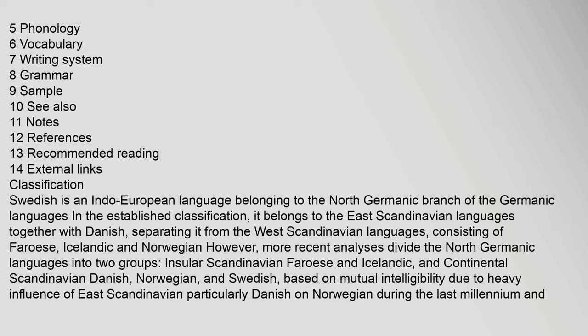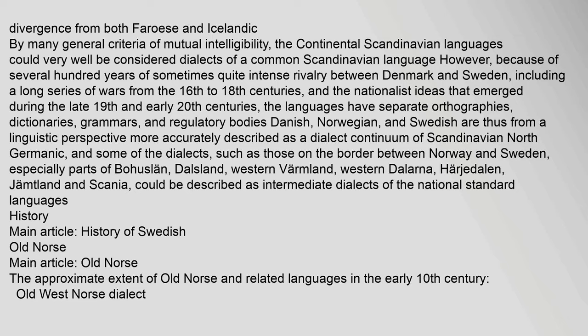This division is based on mutual intelligibility, due to heavy influence of East Scandinavian — particularly Danish — on Norwegian during the last millennium, and divergence from both Faroese and Icelandic. By many general criteria of mutual intelligibility, the continental Scandinavian languages could very well be considered dialects of a common Scandinavian language. However, because of several hundred years of sometimes quite intense rivalry between Denmark and Sweden, including a long series of wars from the 16th to 18th centuries, and nationalist ideas that emerged during the late 19th and early 20th centuries, the languages have separate orthographies, dictionaries, grammars, and regulatory bodies. Danish, Norwegian, and Swedish are thus more accurately described as a dialect continuum of Scandinavian North Germanic.